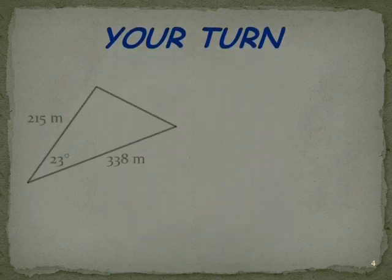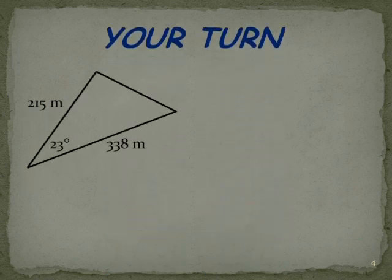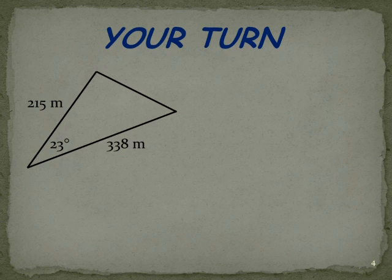This is your turn. Here's your problem. You can think of this as part of a paddock or it is a paddock. 215 metres down one fence line, 338 metres down the next fence line and 23 degrees in between. Quite often with these problems you'll end up having them as a worded problem. And you have to draw the diagram to reflect the situation.